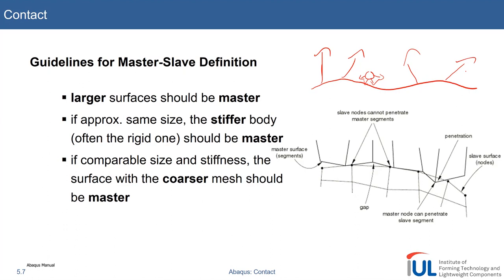In metal forming, work pieces and dies are roughly the same size, so the other rules may be of higher importance. Generally, the stiffer body should be the master. Especially in metal forming, quite often one of the two bodies is a rigid body, and there is almost no case where you would not define the rigid body as the master. So if you have a rigid die and a deformable work piece, the die or matrix is your master and the deformable work piece is your slave.